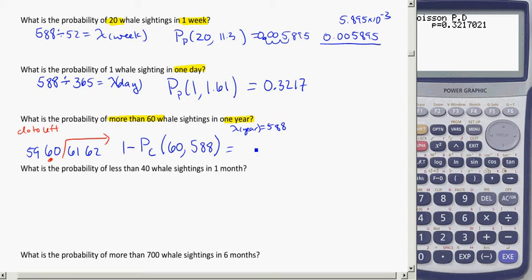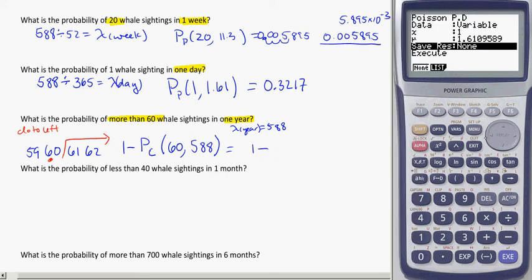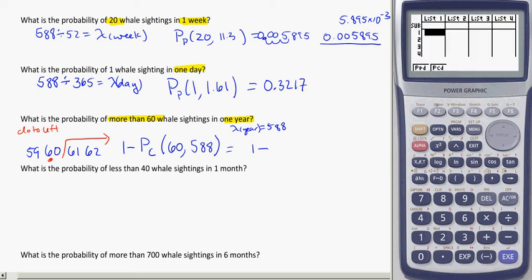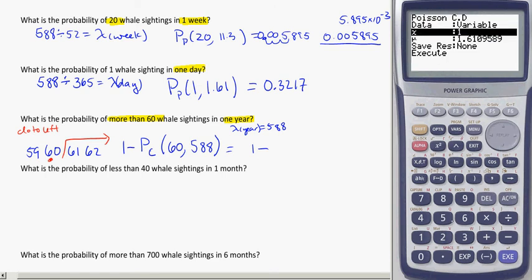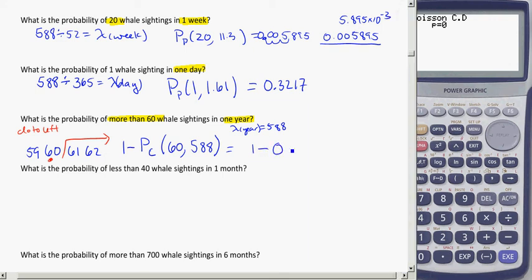So 1 minus, let's figure out what that's going to be. I need to exit and get back to CD. And now I'm going to have 60 and 588. And here it's telling me 0, but that's ridiculous. So, what they're saying here is that my probability is essentially 0. So 1 minus 0 is essentially 1. This is basically saying it's almost a guarantee that you're going to see more than 60 whales in a year if on average you see 588 of them. So, it's almost a certainty.